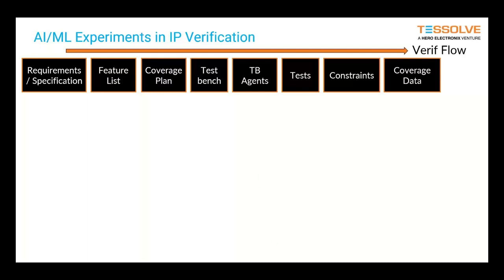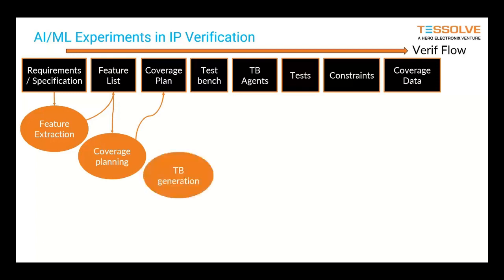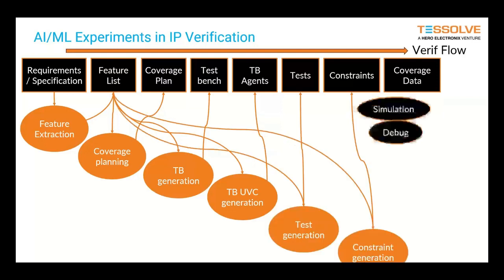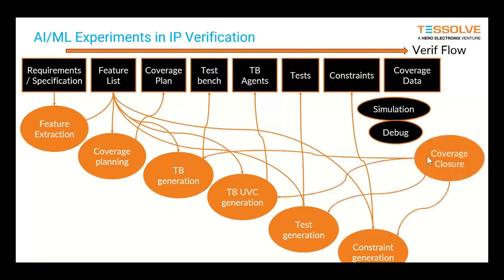Hopefully people recognize that as the main components of a verification flow. Where could we apply AI? You can see we've done some feature extraction, coverage planning, test bench generation, and UVC generation for the agents to go into that test bench — plus test generation, constraint generation. Coverage data comes from simulation and debug, and we want to achieve coverage closure, which may feed back into earlier stages.